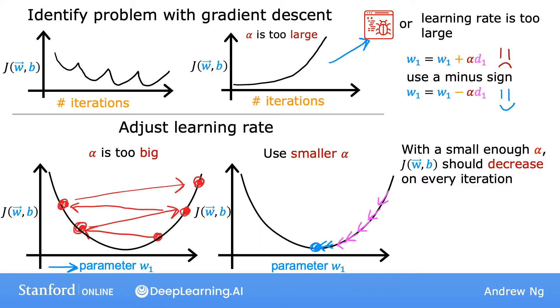If gradient descent isn't working, one thing I will often do, and I hope you find this tip useful too, is just set alpha to be a very, very small number and see if that causes the cost to decrease on every iteration. If, even with alpha set to a very small number, j doesn't decrease on every single iteration but instead sometimes increases, then that usually means there's a bug somewhere in the code.